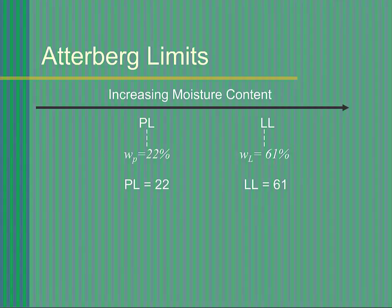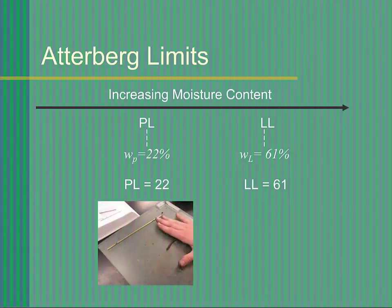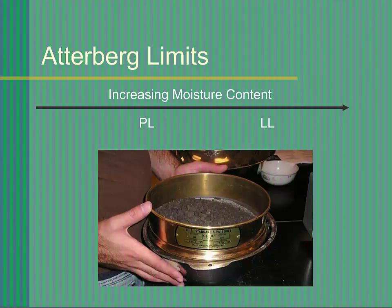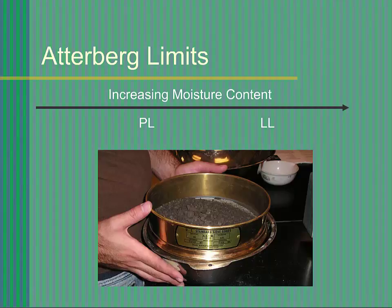There are two different tests, one to determine each of the Atterberg limits. Each test has its own equipment and procedures. But before discussing the equipment, we must first describe how to prepare samples for testing. You will need 150 to 300 grams of soil for these tests. These tests are performed on only the fine-grained portion of the soil. If the soil contains significant amounts of sand or gravel, we must pass the soil through a number 40 sieve to remove the larger sand and gravel particles before performing the Atterberg limits test.